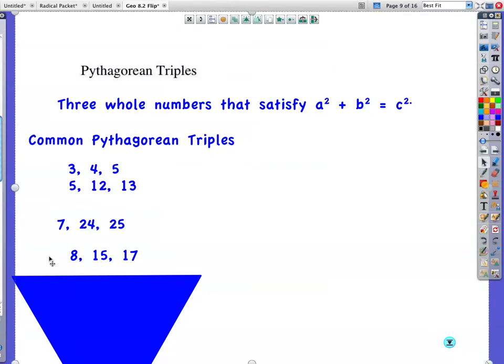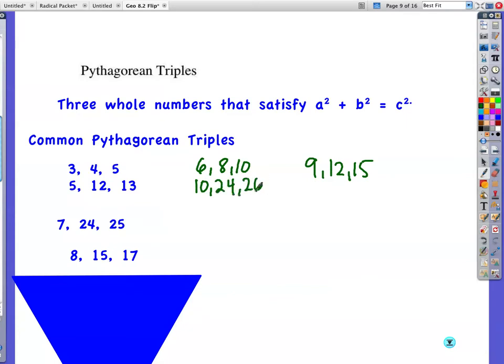Now here's the cool thing about this. 3, 4, 5, if you double it, is 6, 8, 10. Also a Pythagorean triple. If you triple this, you'll have 9, 12, 15. Also a Pythagorean triple. And these are pretty common in our classroom, too. Same with here. You can double them. 10, 24, 26. Pythagorean triple. This is going to be a right triangle. You can triple this. You get 15. 12 times 3 is 36. 13 times 3 is 39. You get the idea.